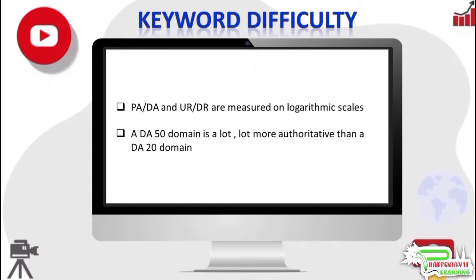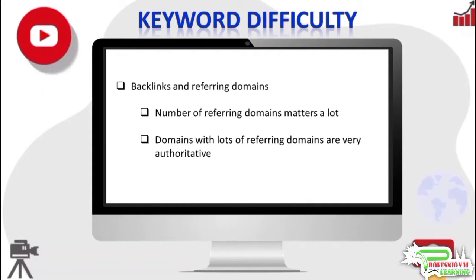Domain authority, page authority, URL rating, and domain rating are measured on logarithmic scales, so a domain with a domain authority of 50 is a lot more authoritative compared to one with a domain authority of 20. In addition, there are a couple of other numbers you would need to look at for any website: backlinks and referring domains. Of the two, the number of referring domains is a very important metric — the greater this number, the more authoritative a website is.